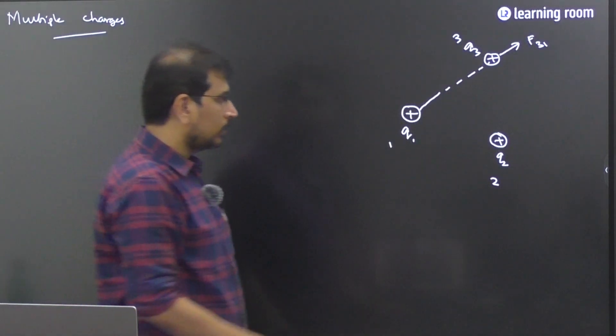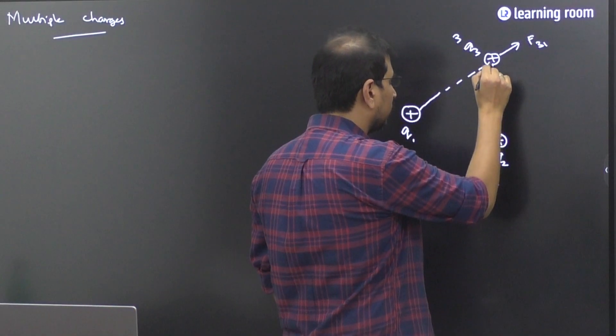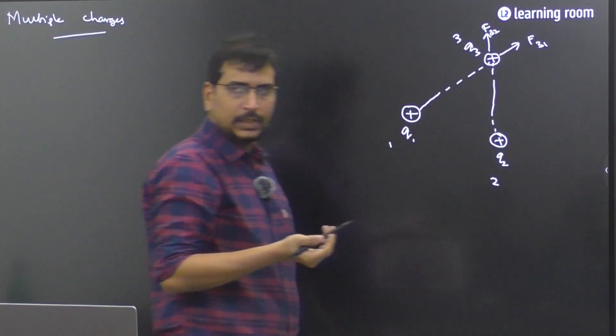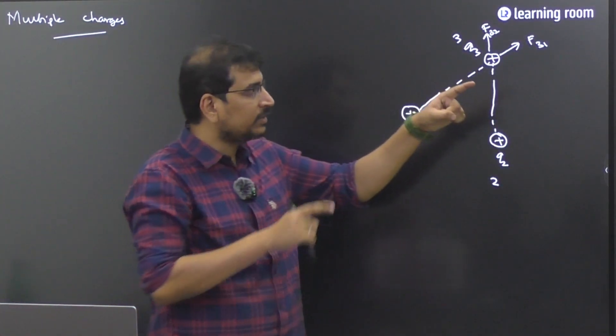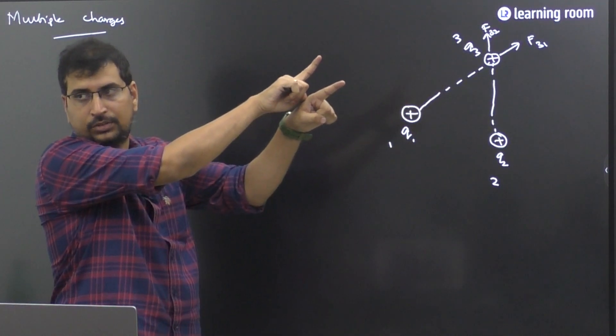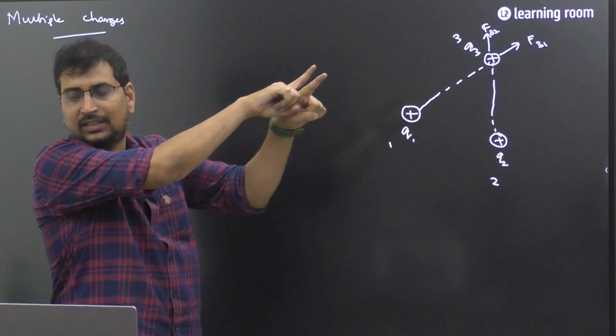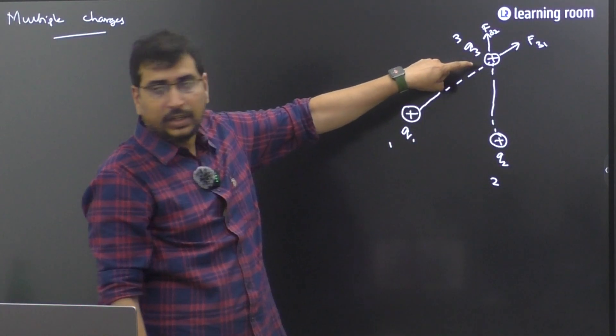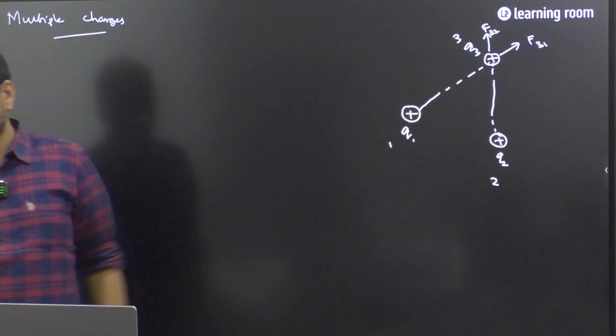Very good. What about this force? F3, 2. F3, 1 is acting in this direction and 3, 2 in this direction. So we need to find the resultant of this. That will give me the answer for the force experienced by q3 due to q1 and q2.